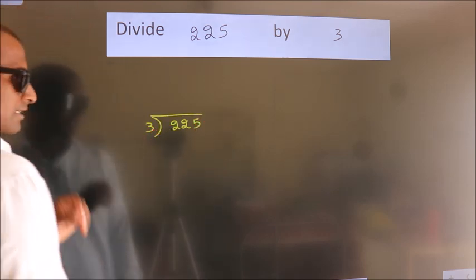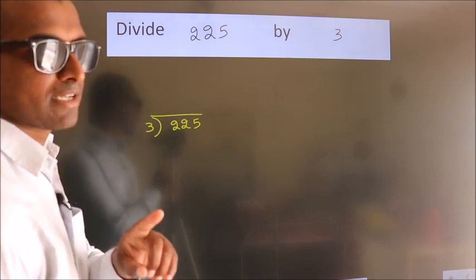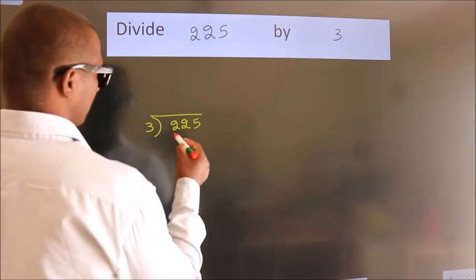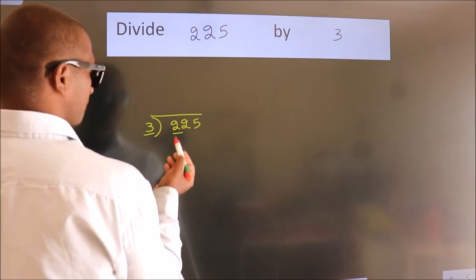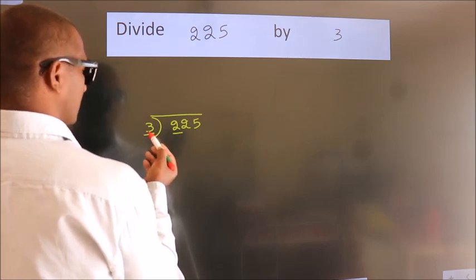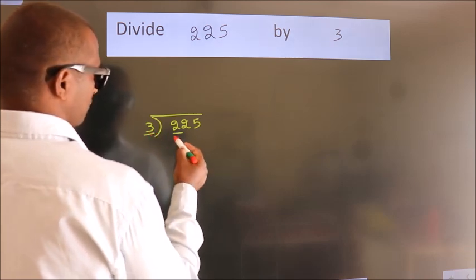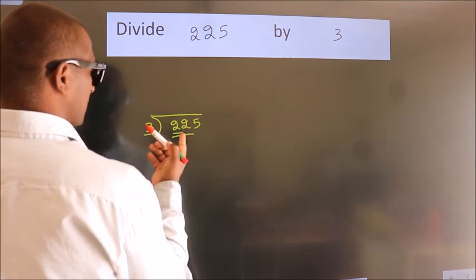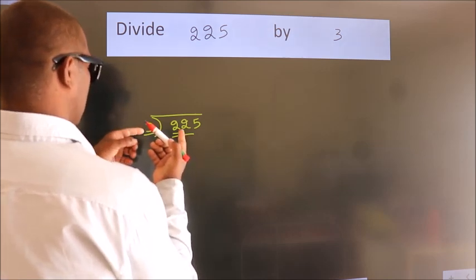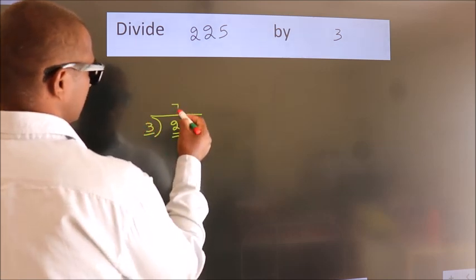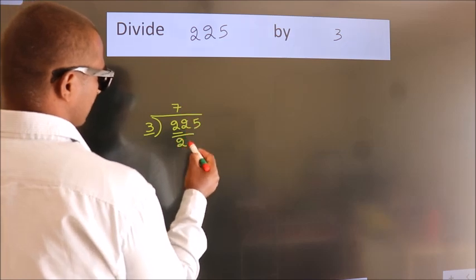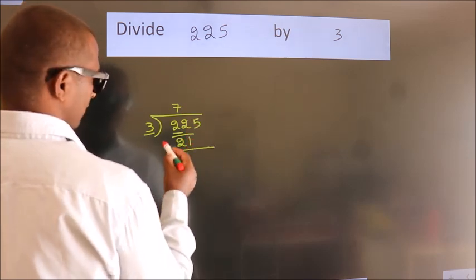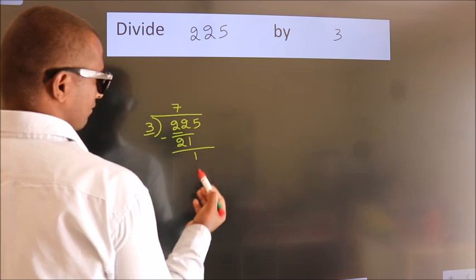This is your step 1. Next, here we have 2, here 3. 2 is smaller than 3, so we should take 2 numbers: 22. A number close to 22 — in the 3 times table, 3 sevens is 21. Now we should subtract. We get 1.